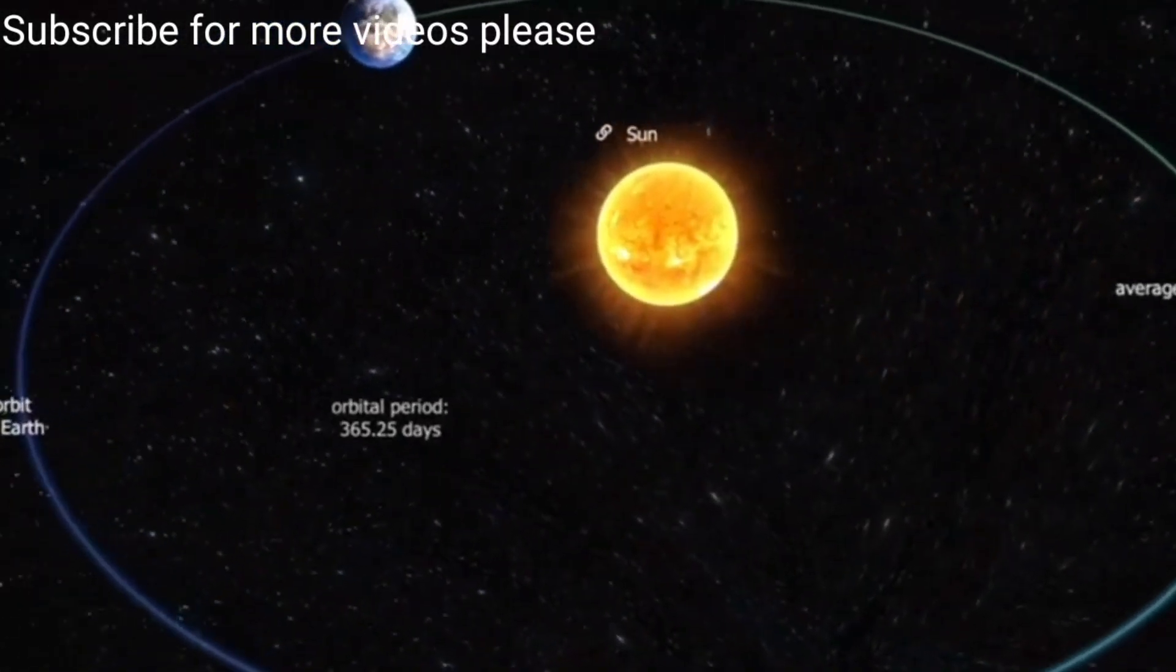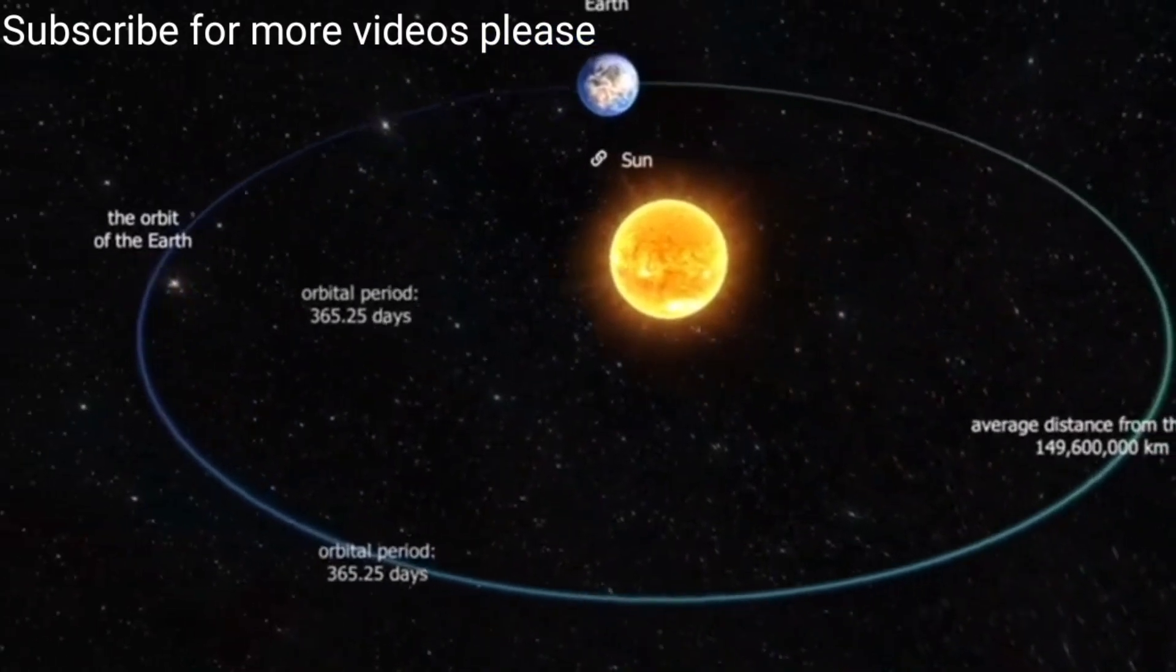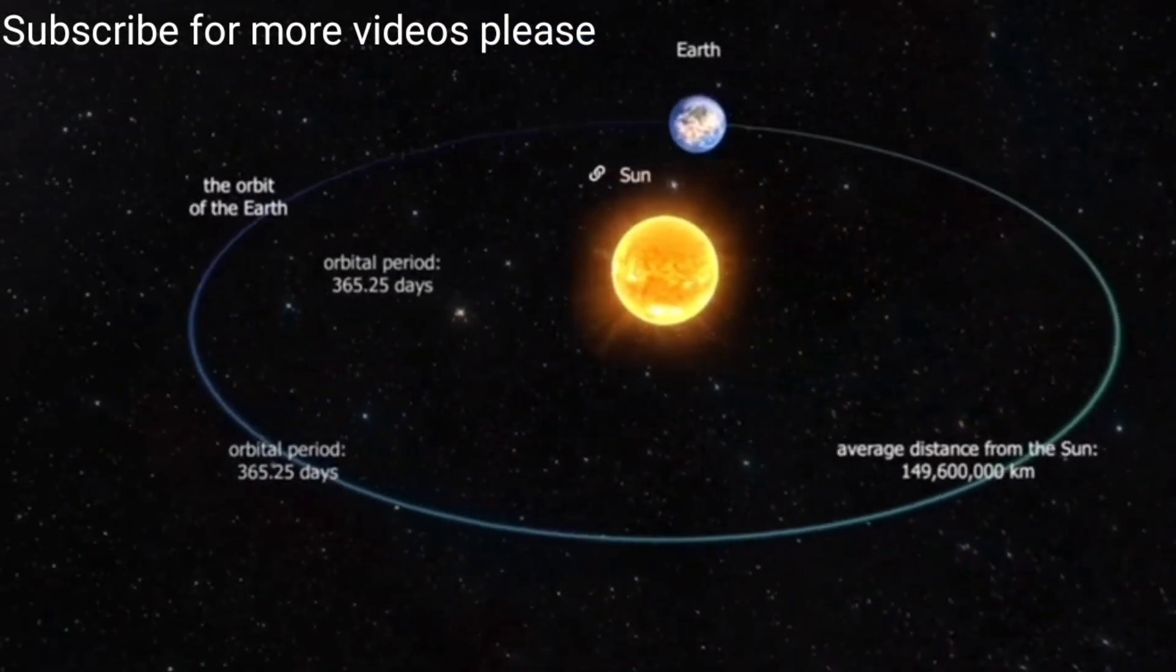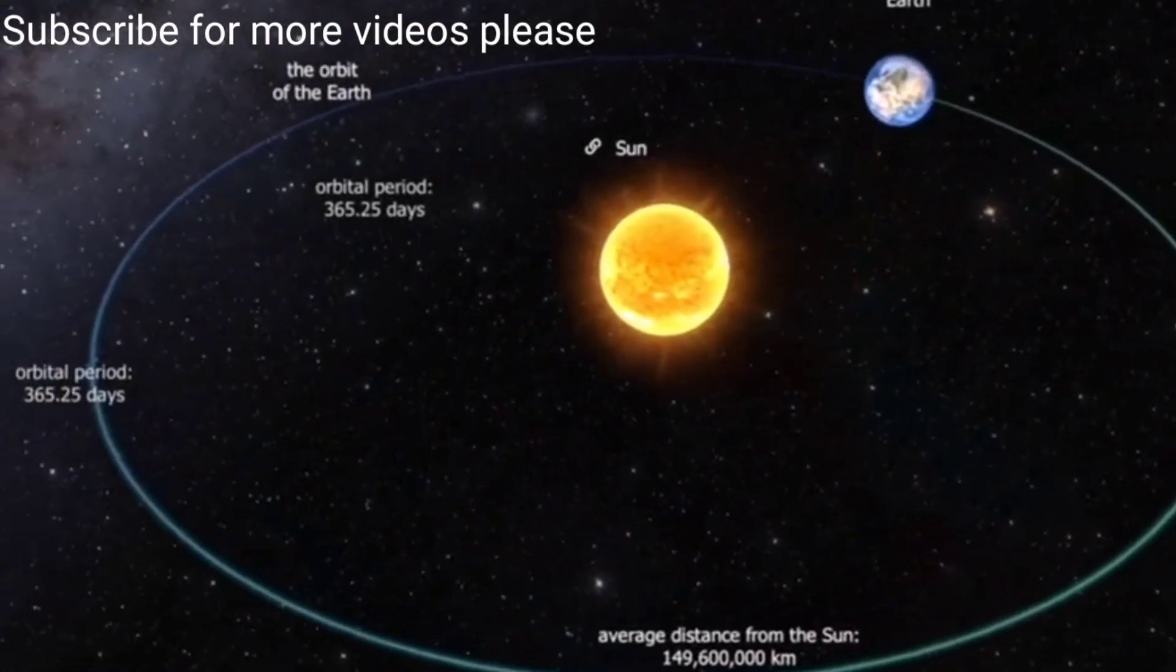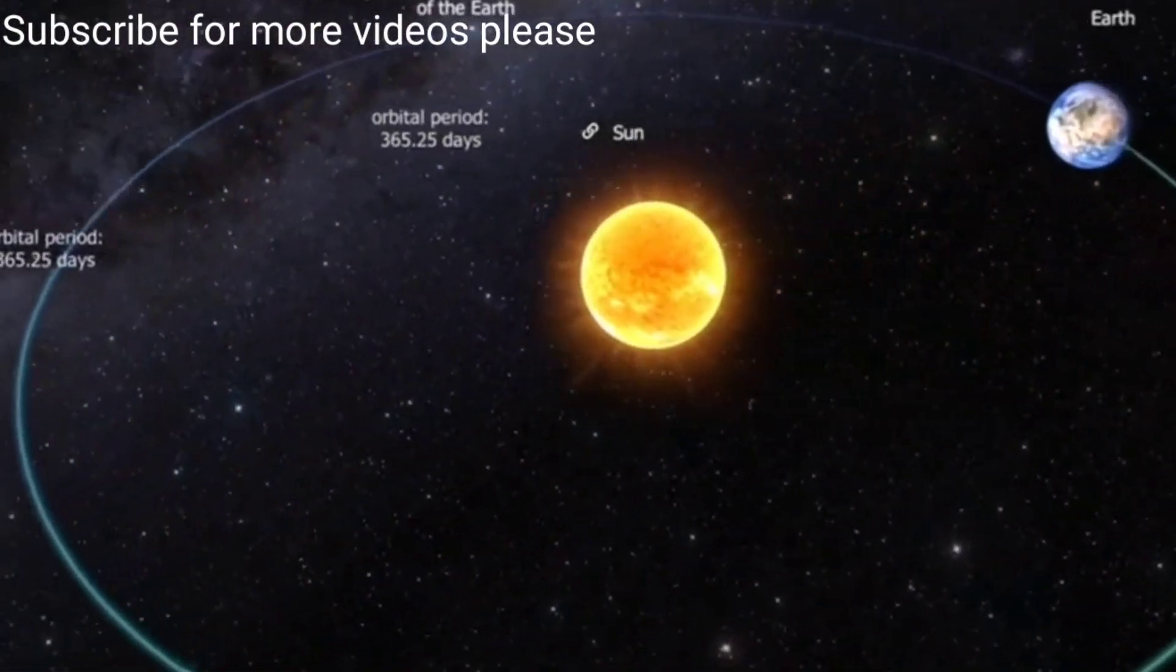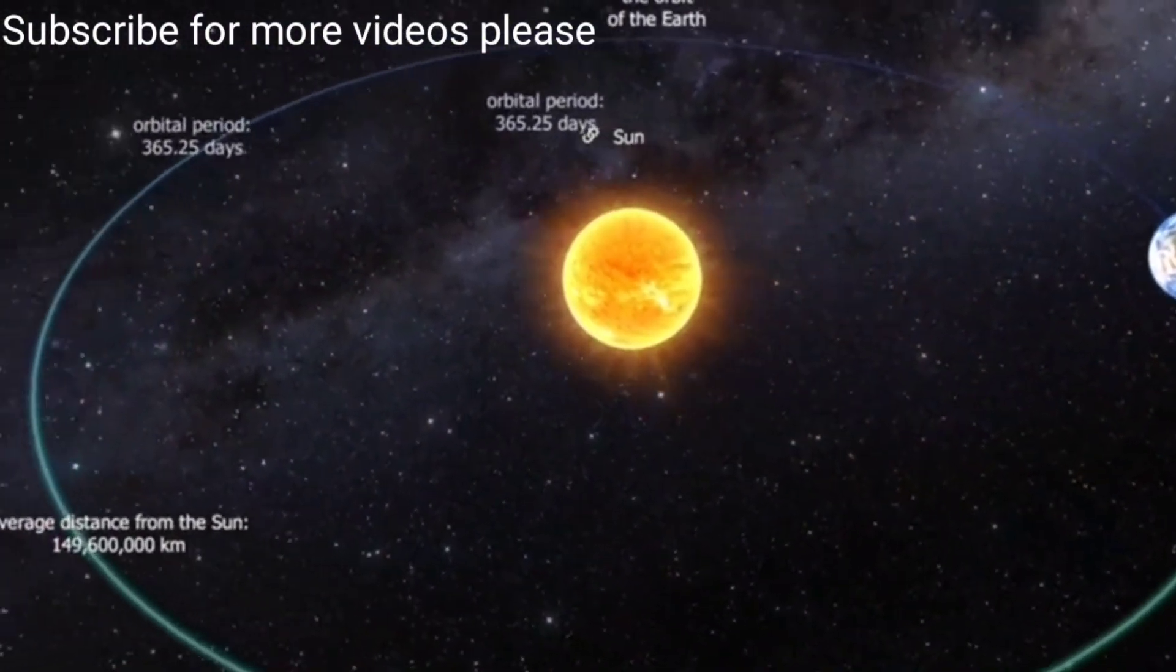While the Earth revolves around the Sun once, it rotates on its axis about 365.26 times. This period is called one year. The orbital velocity of the Earth is 30 kilometers per second.